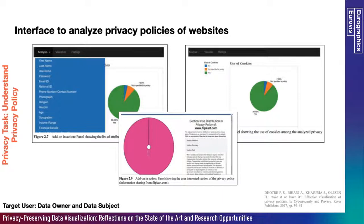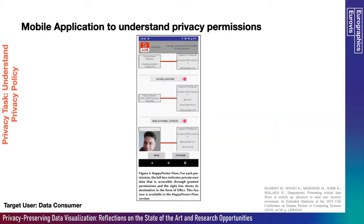The next privacy task is to understand the privacy policies of different websites. The data subject or the data owner must also know how their personal information is being used in the privacy policies of different websites. In this example, Dhotra et al. have developed an interface that performs semi-automatic analysis to make the user aware of how their data is used. In another mobile application developed by Barini et al., users are made aware of how the mobile application is using their privacy permissions, helping the user decide whether or not to use the app.